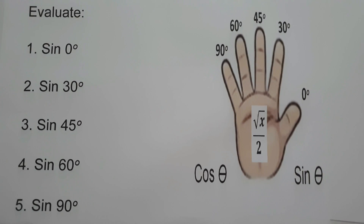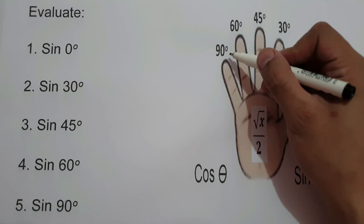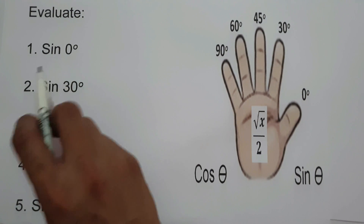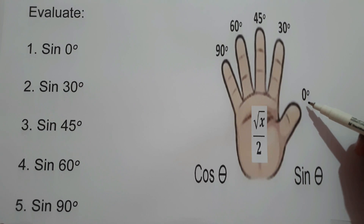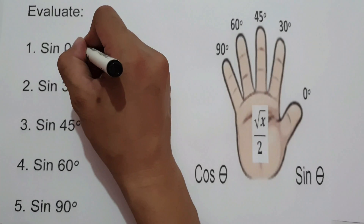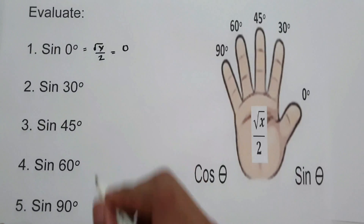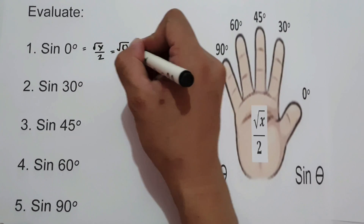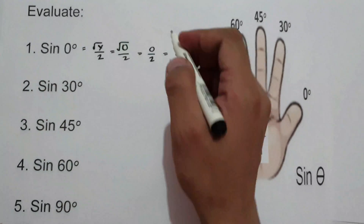On the first set of examples, we are going to find the value of sine 0°, 30°, 45°, 60°, and 90° using the equation square root of x over 2. For sine 0°, there is no finger between 0° and sine theta. Therefore, x is 0, so we have square root of 0 over 2, which equals 0. Sine 0° is 0.